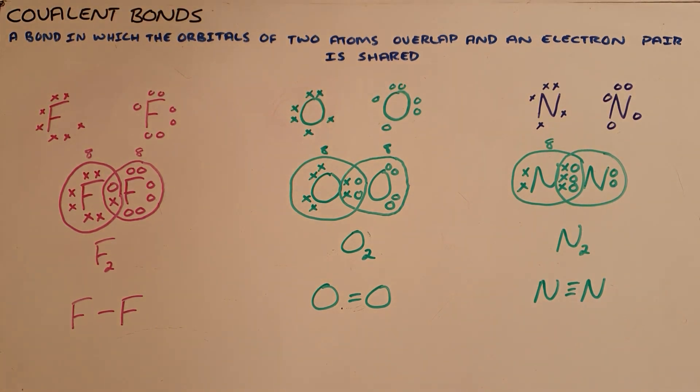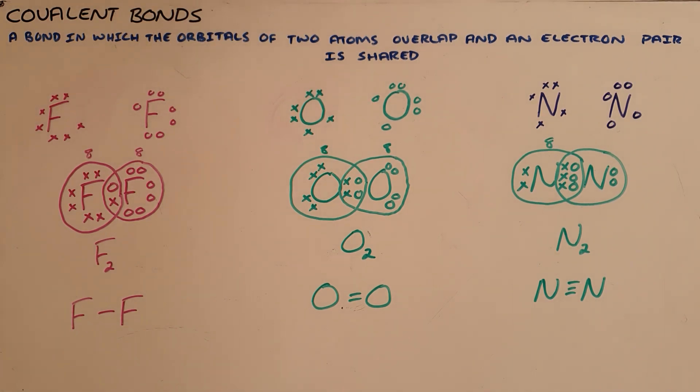It is important to note that these types of bonds only happen when the orbitals overlap. And as a result, a double bond would be much shorter than a single bond because the atoms need to be closer together to share more electrons. And so too, a triple bond would be much shorter than a double bond.